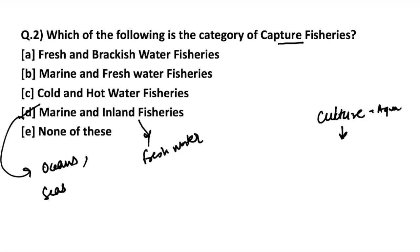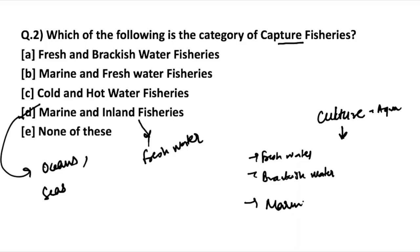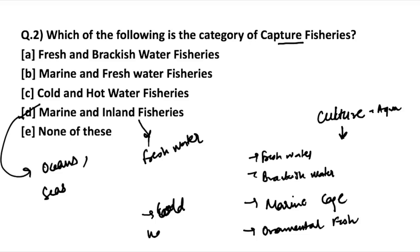Culture fisheries can be done in many categories: freshwater, brackish water, marine cage, ornamental fisheries, and cold water aquaculture. These are the different categorizations of aquaculture or culture fisheries. Now, a static question for you — tell me in the comment section below where the largest brackish water lake in India is located.